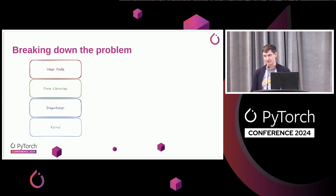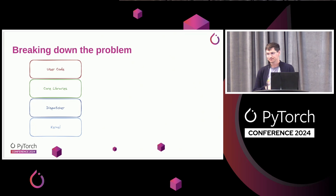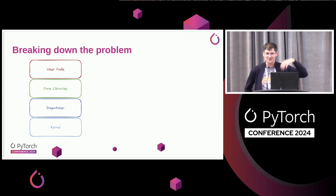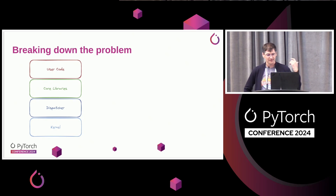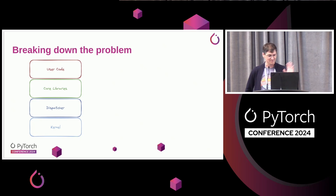Breaking down the problem from these four lines of code, going top to bottom in the call stack — from user code, what I'm going to call core libraries, the dispatcher (a super cool, one of the best pieces of PyTorch), and then your kernels.